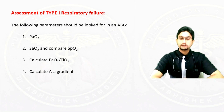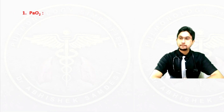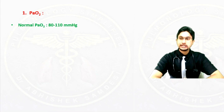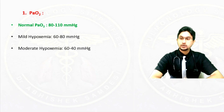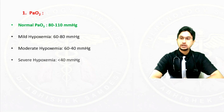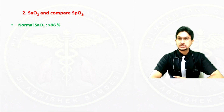The normal PaO2 is 80 to 110 mmHg. A PaO2 between 80 and 60 mmHg is mild hypoxemia. Moderate hypoxemia is when the PaO2 is between 60 to 40 mmHg, and severe hypoxemia is when the PaO2 is less than 40 mmHg.